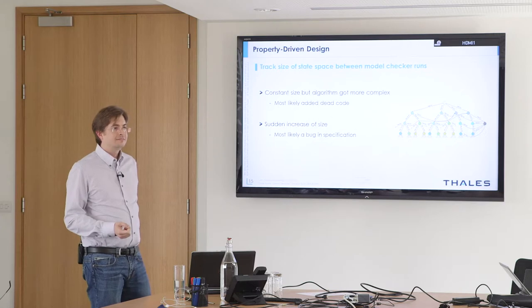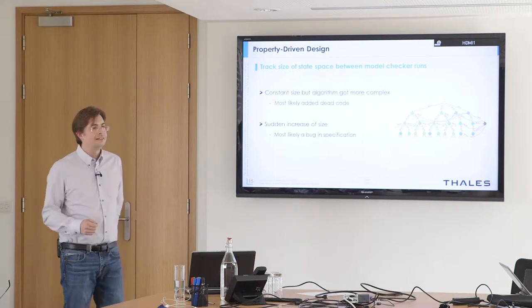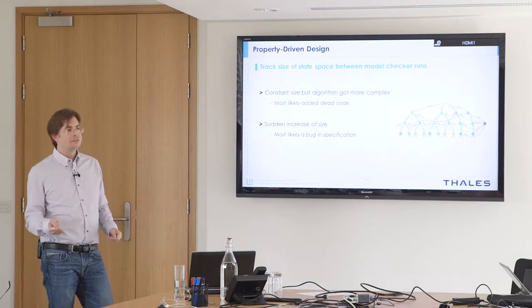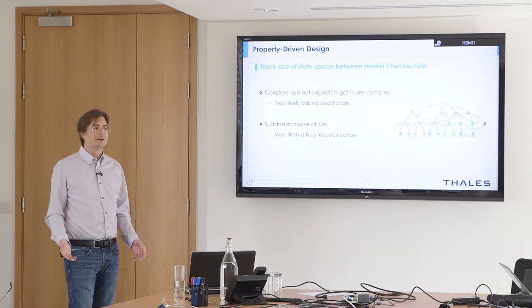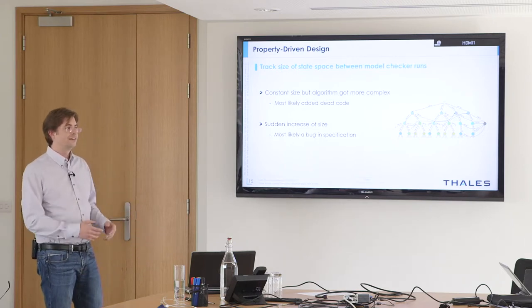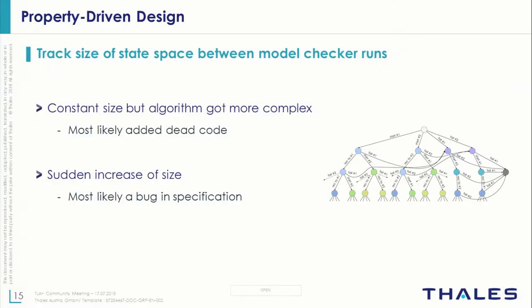By negating properties, we found scenarios we didn't anticipate originally. Usually you design such an algorithm by getting experienced engineers together at a whiteboard. We found scenarios we hadn't thought of initially — there were traces of more than 30 steps. It definitely gave us the feedback, and finding these things during testing would be expensive.